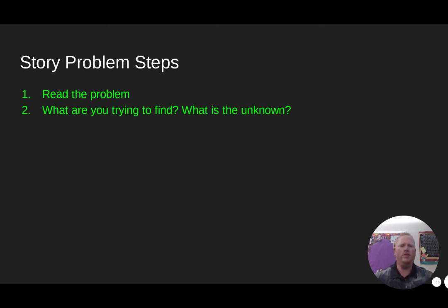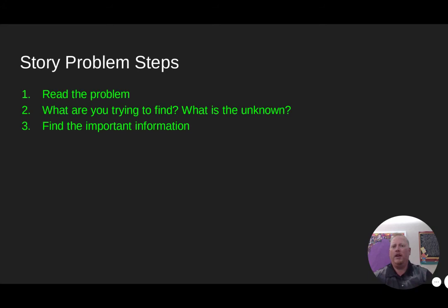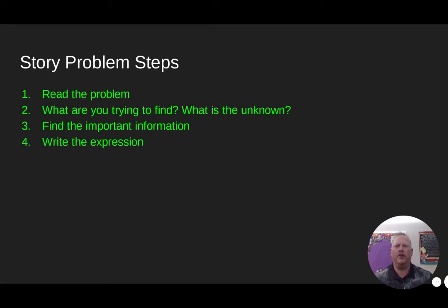Here are the story problem steps to follow every time. Step one: read the problem — don't try to understand it all at once, just read through and see what information stands out. Step two: ask yourself what you're trying to find — what's the unknown? Step three: reread and identify what information is important, filtering out anything that isn't relevant. Finally, write the expression.